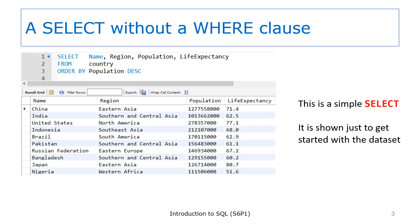The four selected columns are: Name for country name, Region, Population, and Life Expectancy. We'll be working with this SELECT throughout this video.